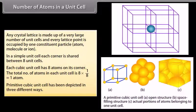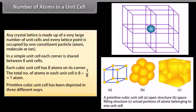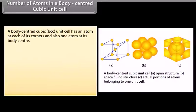The primitive cubic unit cell has been depicted in 3 different ways. A body centered cubic (BCC) unit cell has an atom at each of its corners and also one atom at its body center.